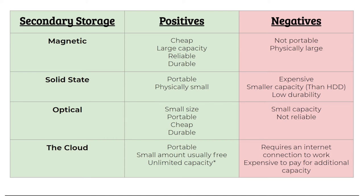Capacity refers to how much data can be stored on the device. Cost refers to how expensive or cheap the device is. Reliability is how likely the device is to break. Portability is whether or not the device can be moved safely without breaking. Durability refers to how many times the device can be used before it breaks, and size refers to the physical dimensions of the device. For example, solid state has a low durability because data can only be read to and written from the device a set amount of times.